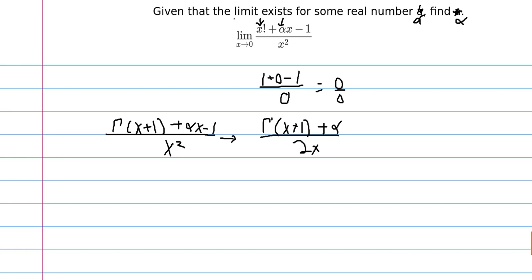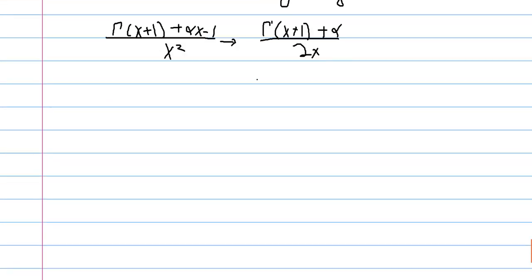We are given that the limit exists. So the limit will only exist if the numerator is equal to 0, that is, the derivative of gamma evaluated at 1 plus alpha equals 0.